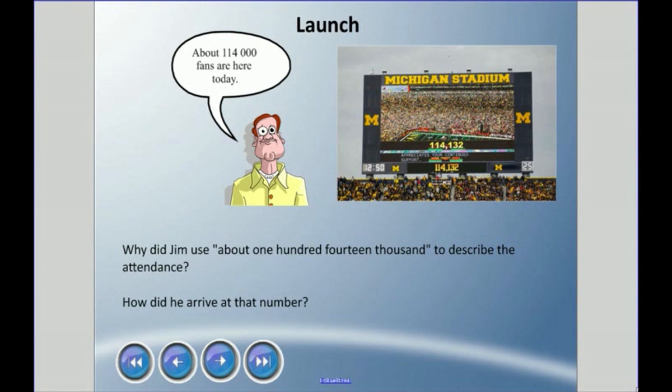Hey everyone, welcome back to another adventure, another epic quest in whole numbers math. I have a picture here about Michigan Stadium in the United States and how many people are attending. Here Jim is saying about 114,000 people came and attended the football game today. How in the world did he get at that number?